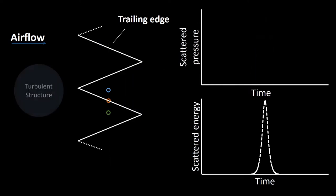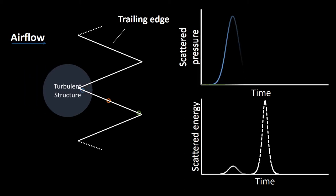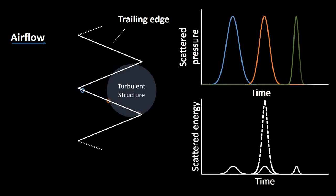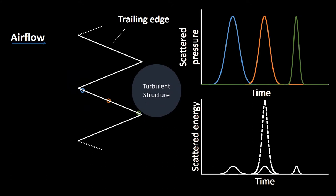Instead, if the geometry of your blade trailing edge is not straight, but features a certain angle with respect to the flow, the scattering will happen at different time instants on the different portions of the trailing edge. And consequently, the total noise will be reduced.